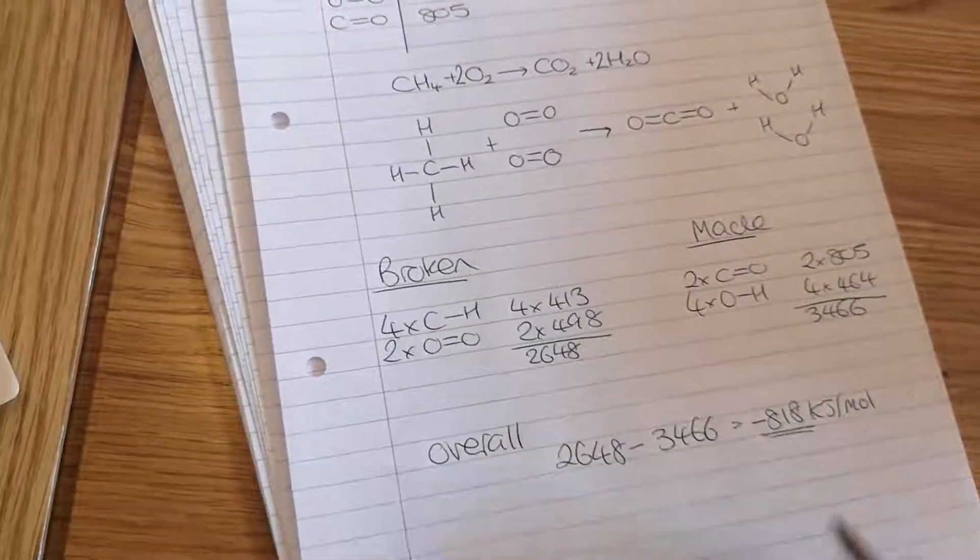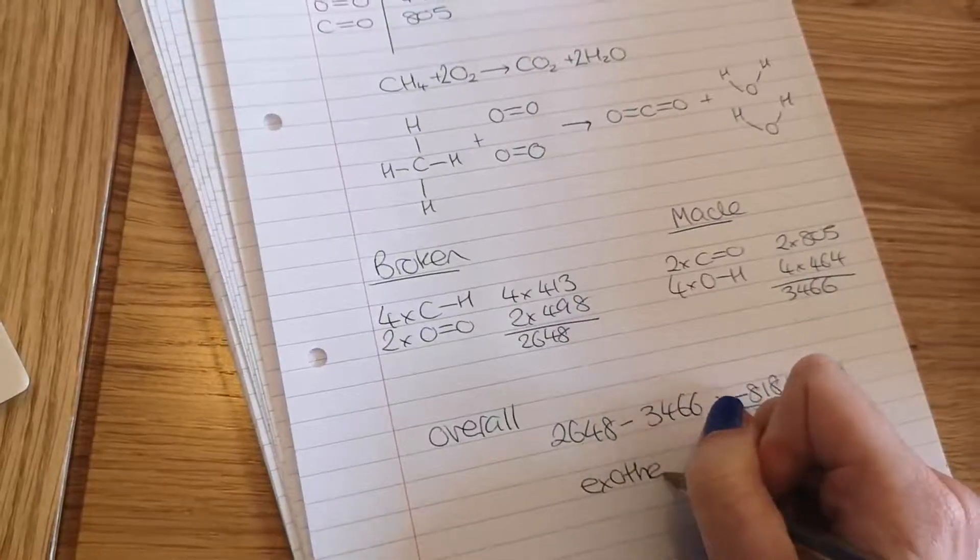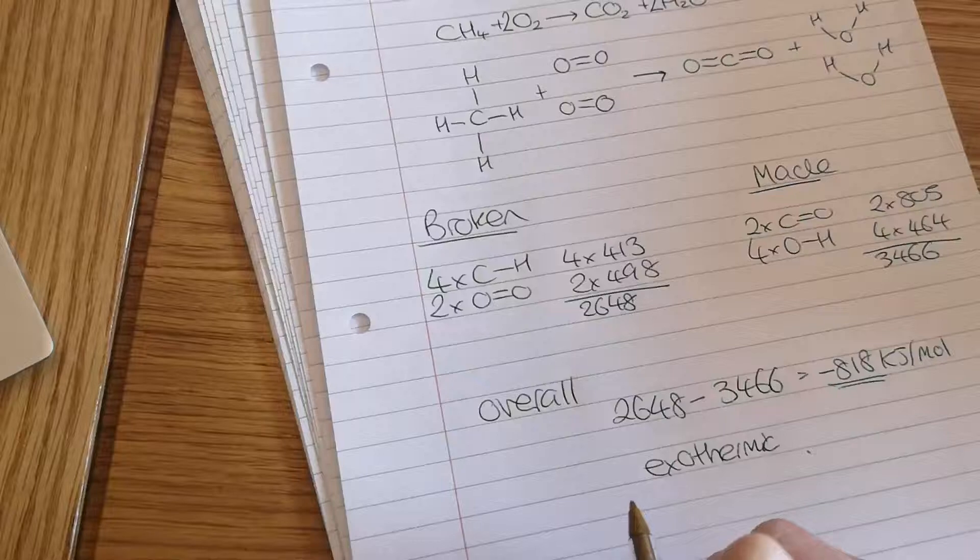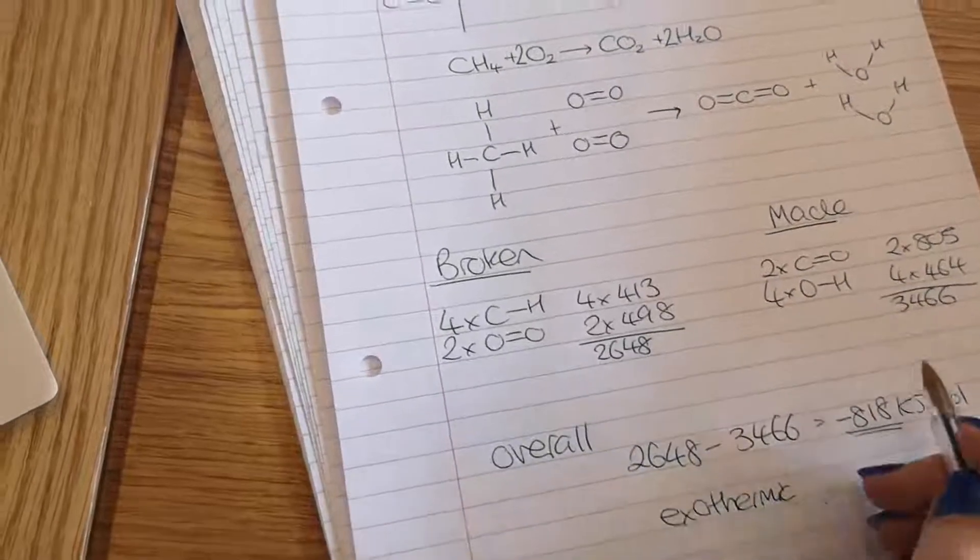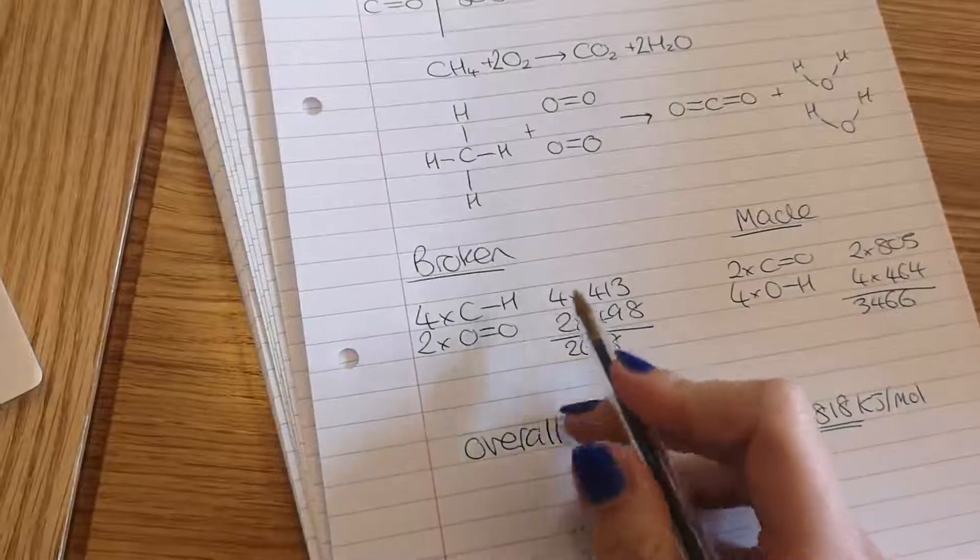Now that's a negative number, so that shows me that this reaction is exothermic. But in an exam when they ask you why the reaction is exothermic, you want to say that more energy was released making bonds than was taken in to break bonds.